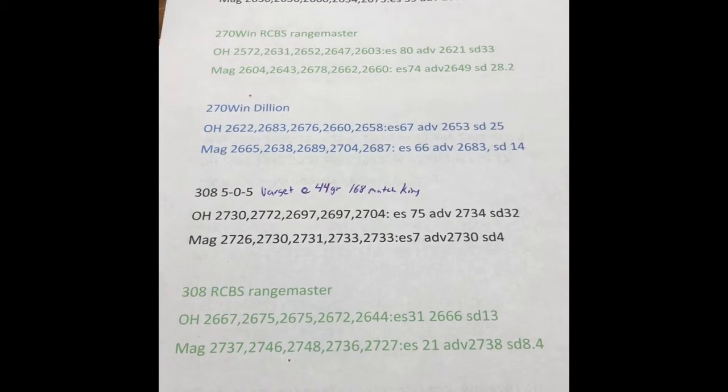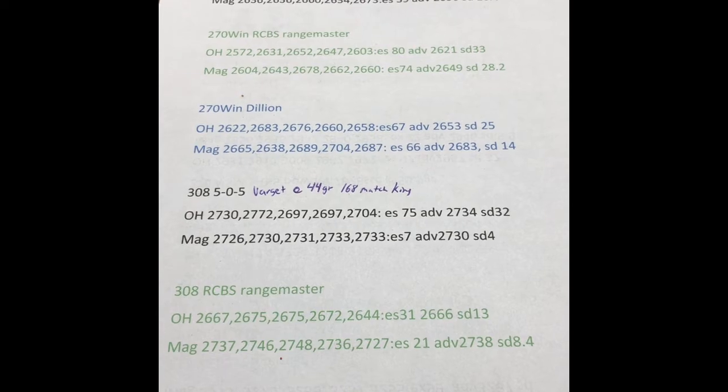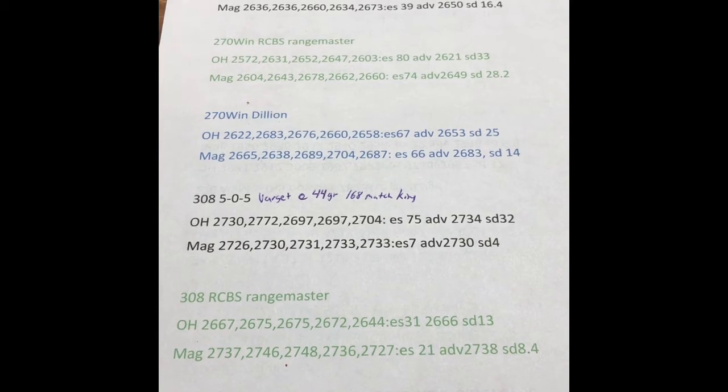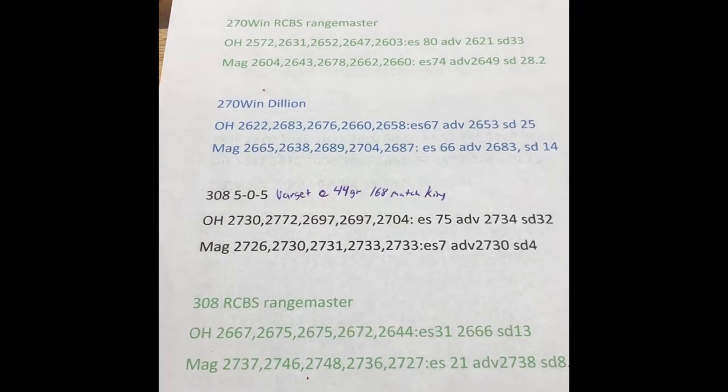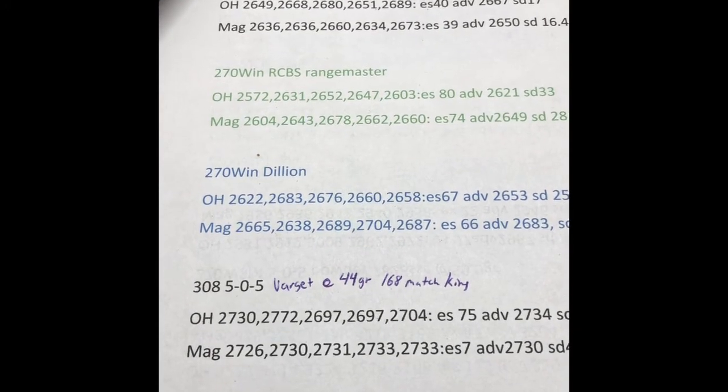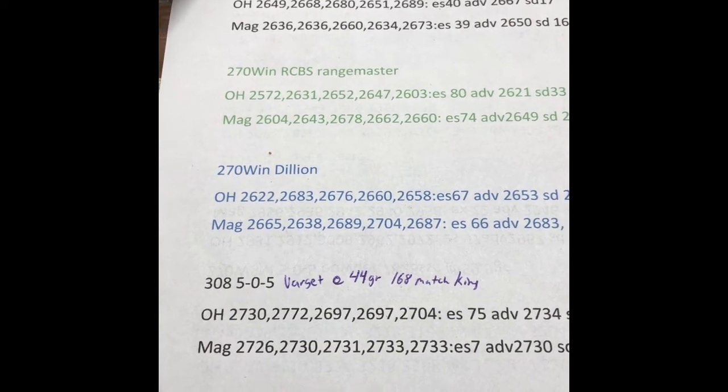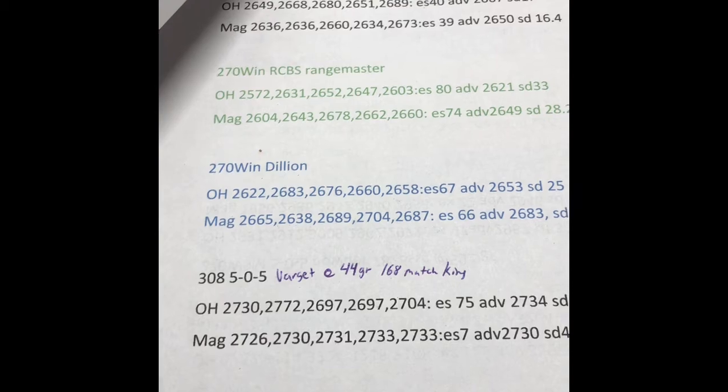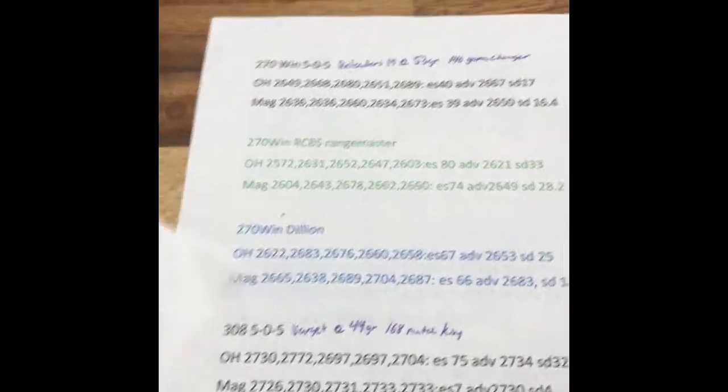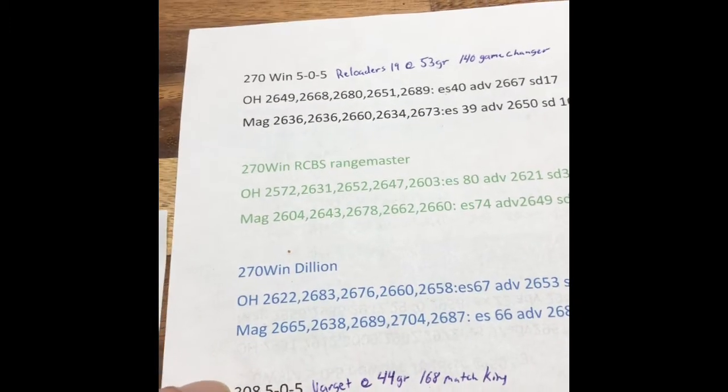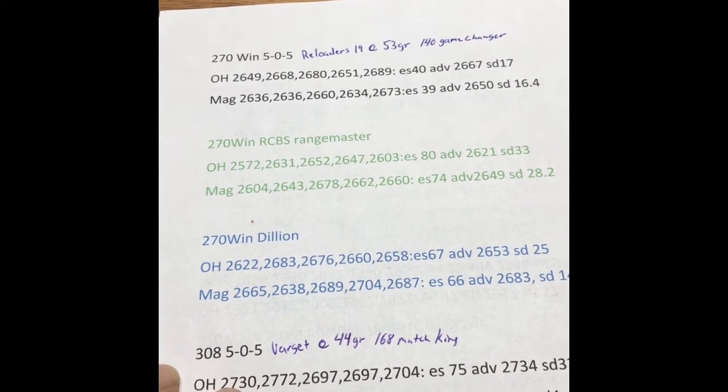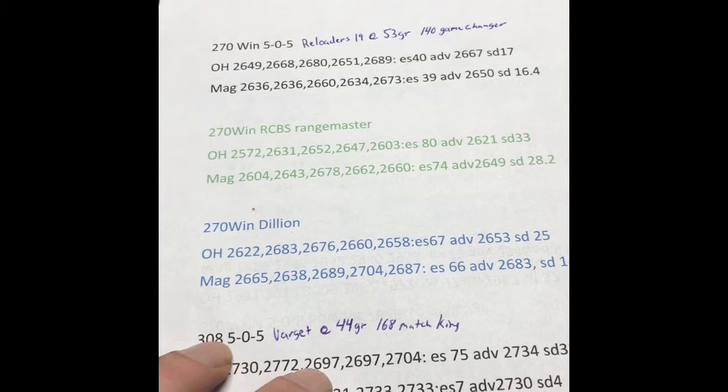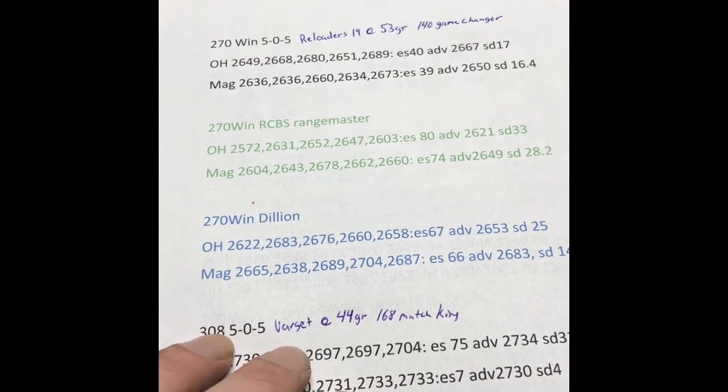The Oehler kind of agreed with the MagnetoSpeed there on the RCBS Rangemaster one, but for some reason that beam scale and that thing just could not agree whatsoever on velocities. I mean, the same bullet, first one it shot was 2730, 2726. That's pretty dang close. And then it jumped up to 2772 and then 2730.